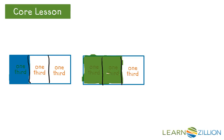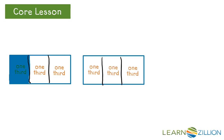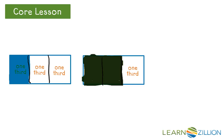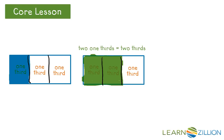Let's look at another one. Again, I want to first look at how many equal shares my whole is partitioned into. I know it was partitioned into three equal shares, so each region is called one-third. Now I want to look at how many have shading. I'm going to count each unit fraction: one-one-third, two-one-thirds have shading. Instead of saying two-one-thirds, we will just say two-thirds. So I would count it one-third, two-thirds. Two-thirds have shading.